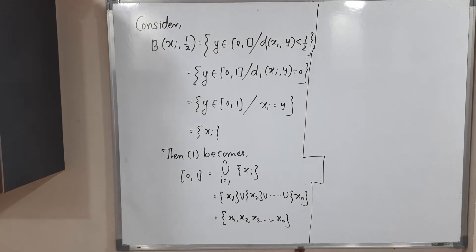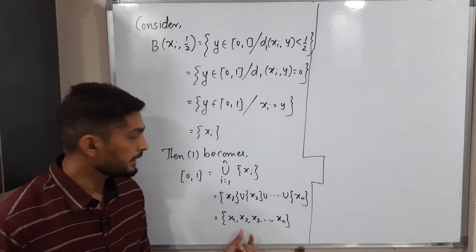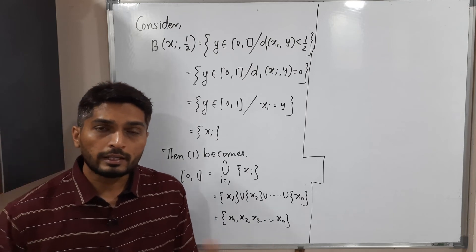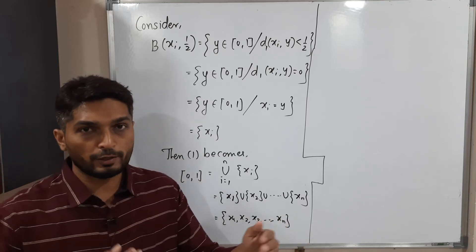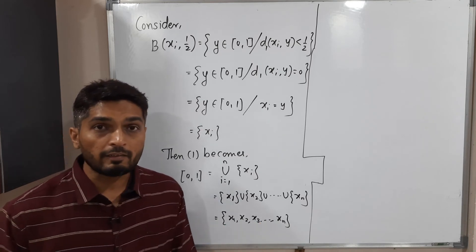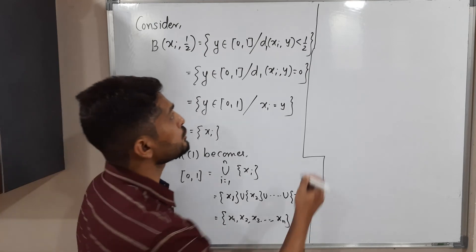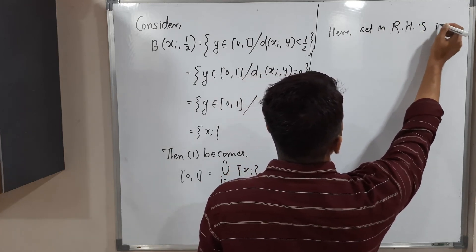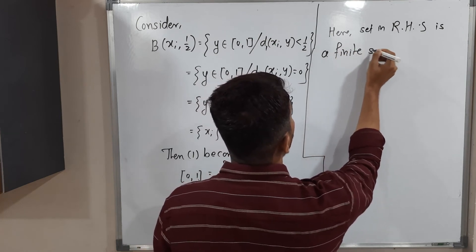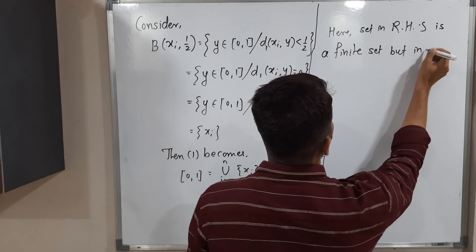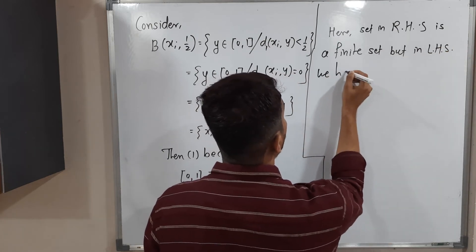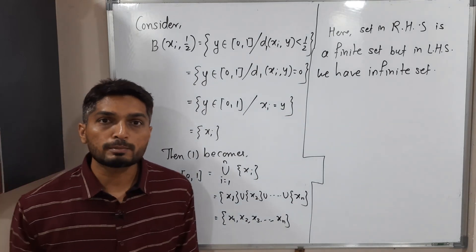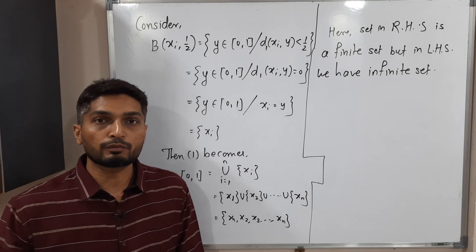Now on the right-hand side we have a set with only n elements — it is a finite set. But on the left-hand side we have the closed interval [0,1], which is an infinite set — there are infinitely many elements between 0 and 1. We are saying both sets are equal, but a set with infinitely many elements and a set with finitely many elements cannot be equal.